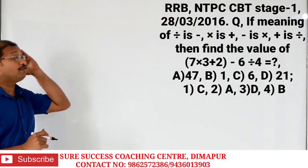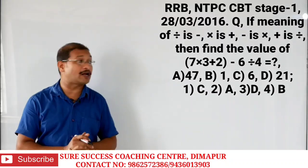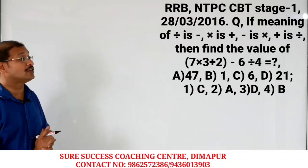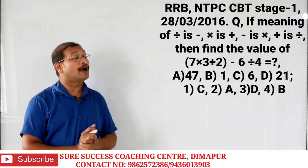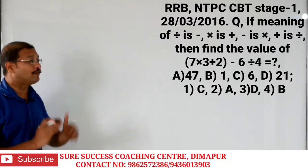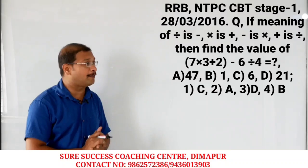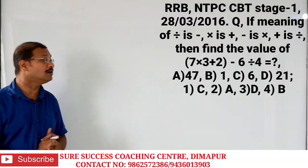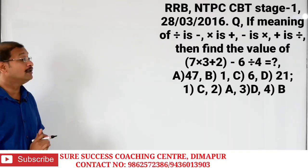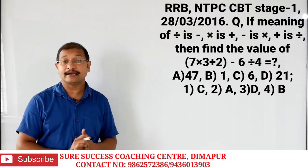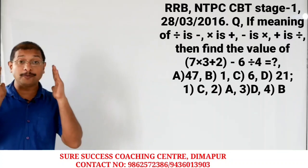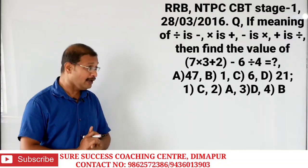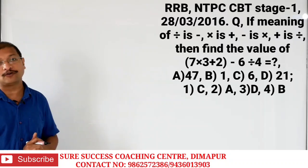I will read the question once. If the meaning of division is subtraction, multiplication is addition, subtraction is multiplication, and addition is division, then find the value of 7 into 3 plus 2 minus 6 divided by 4. Options: A) 47, B) 1, C) 6, D) 21. Option 1: C, Option 2: A, Option 3: D, Option 4: B.